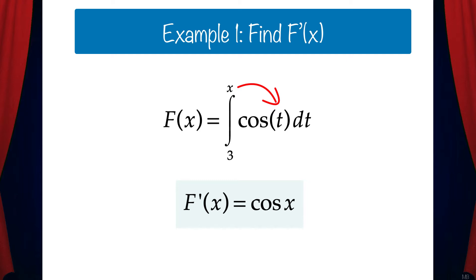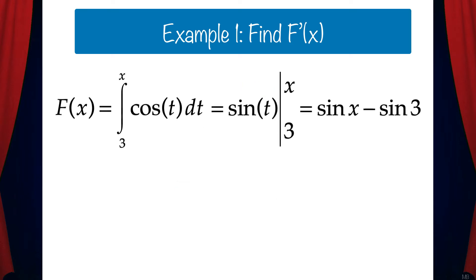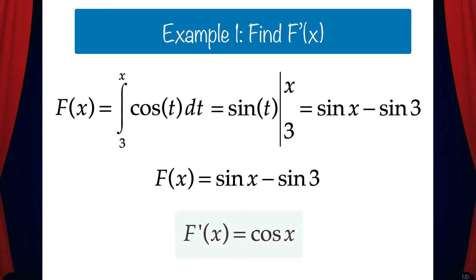Now you might be wondering how is this possible? So let's solve this the long way to prove that the derivative is actually cosine x. If we take the antiderivative of cosine t dt we get sine t, and we'll evaluate that from 3 to x. That gives us sine x minus sine 3, so capital F of x equals sine x minus sine 3. Taking the derivative of sine x minus sine 3, we get cosine x.